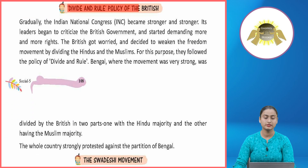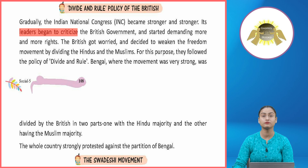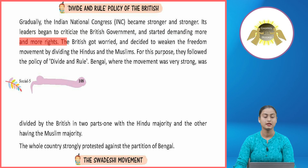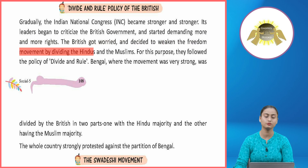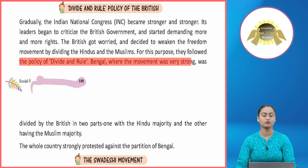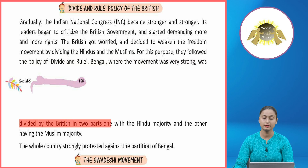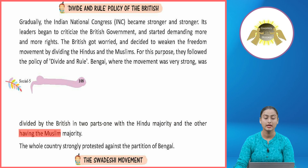Divide and Rule Policy of the British: Gradually, the Indian National Congress became stronger. Its leaders began to criticize the British government and demand more rights. The British got worried and decided to weaken the freedom movement by dividing the Hindus and Muslims. For this purpose, they followed the policy of 'Divide and Rule.' Bengal, where the movement was very strong, was divided into two parts — one with Hindu majority and the other with Muslim majority.